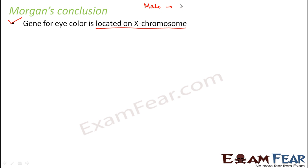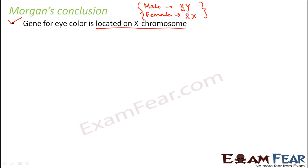For males, the sex chromosomes are XY — one homologous chromosome is X and the other is Y — so during gamete formation a male can contribute either an X or a Y. In females, both homologous sex chromosomes are X, so females are XX.